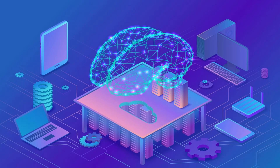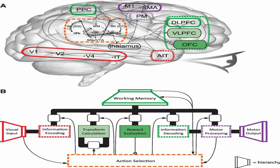A cognitive architecture refers to both a theory about the structure of the human mind and to a computational instantiation of such a theory, used in the fields of artificial intelligence and computational cognitive science.